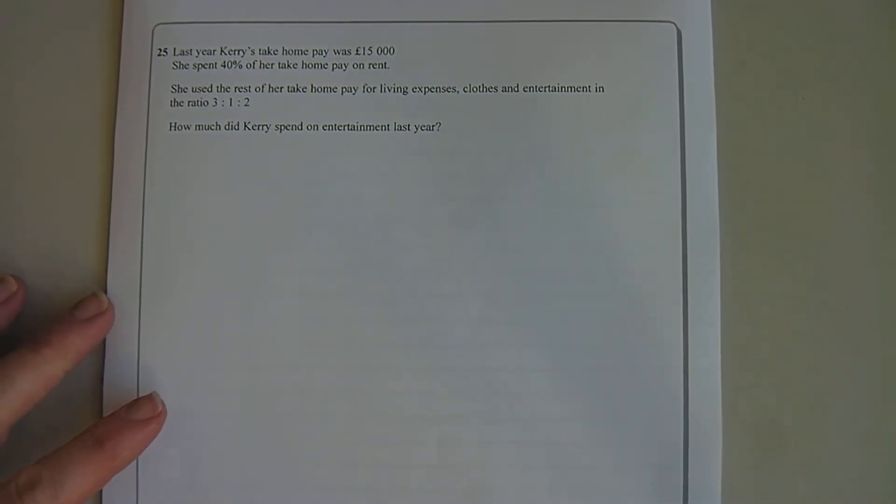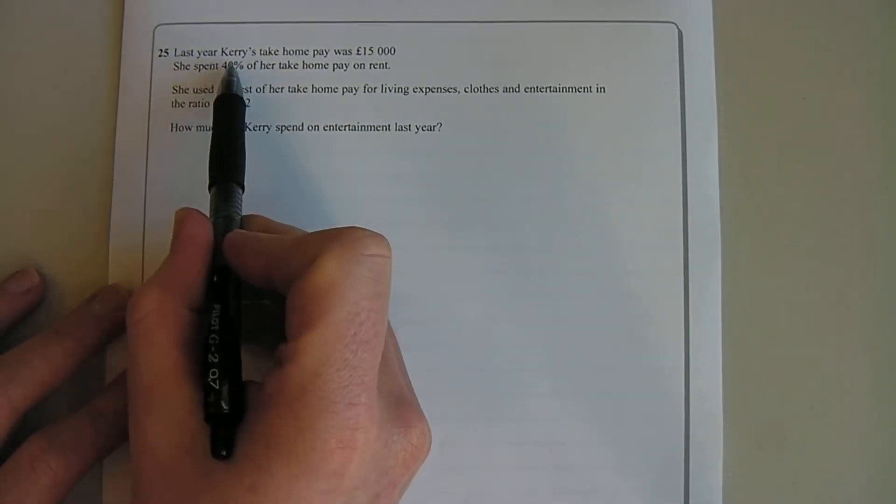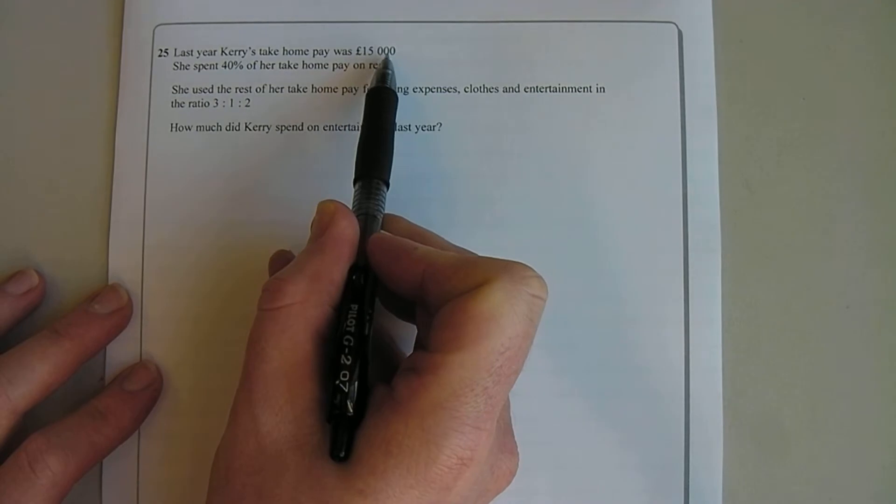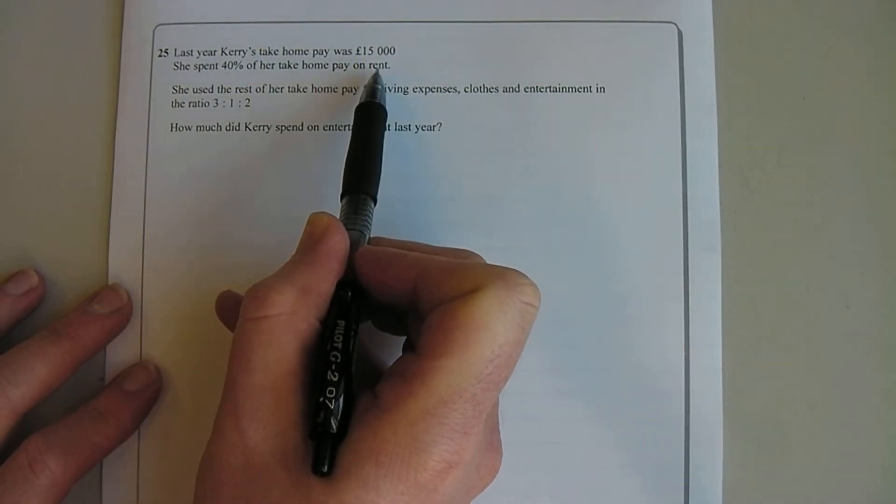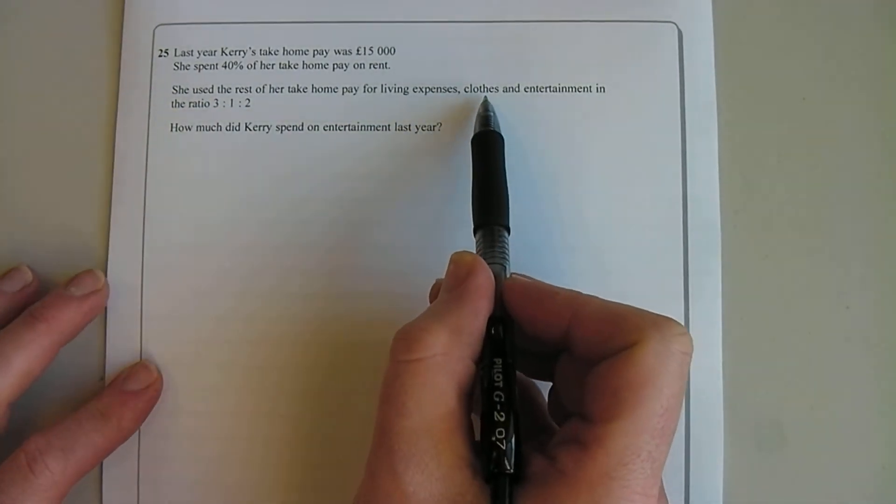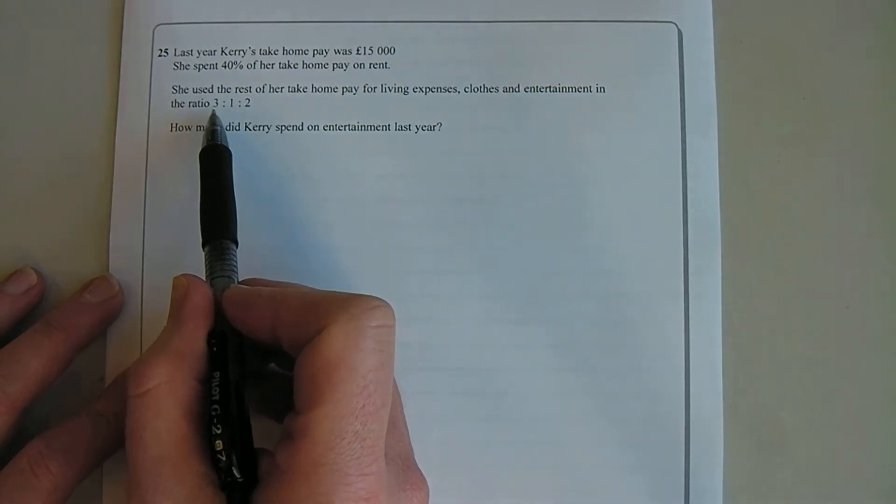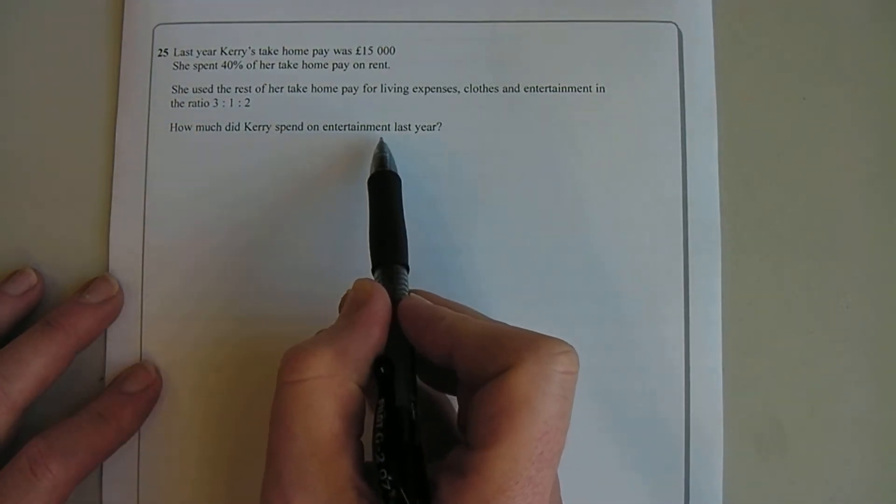So here we have a four mark question for a non-calculated paper. Last year Kerry's take-home pay was £15,000. She spent 40% of her take-home pay on rent. She used the rest of her take-home pay for living expenses, clothes and entertainment in the ratio of 3 to 1 to 2. How much did Kerry spend on entertainment last year?